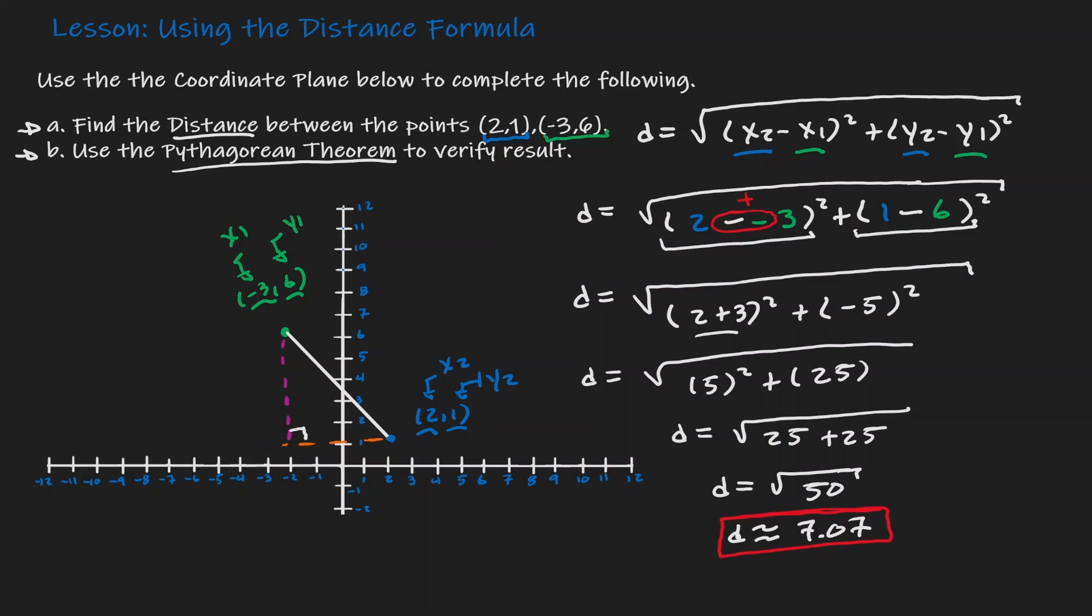And by doing so we create a right triangle. We can find the value of this horizontal distance because that's the difference between negative 3 and positive 2, so that has a value of 5. We can also find the vertical distance, that is the difference between 6 and 1, which is 5.